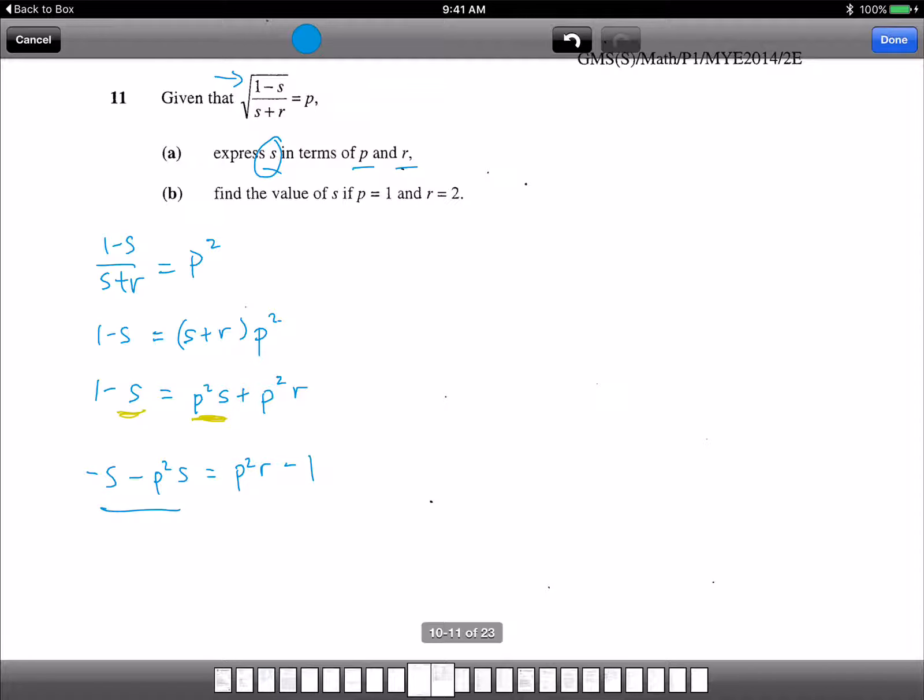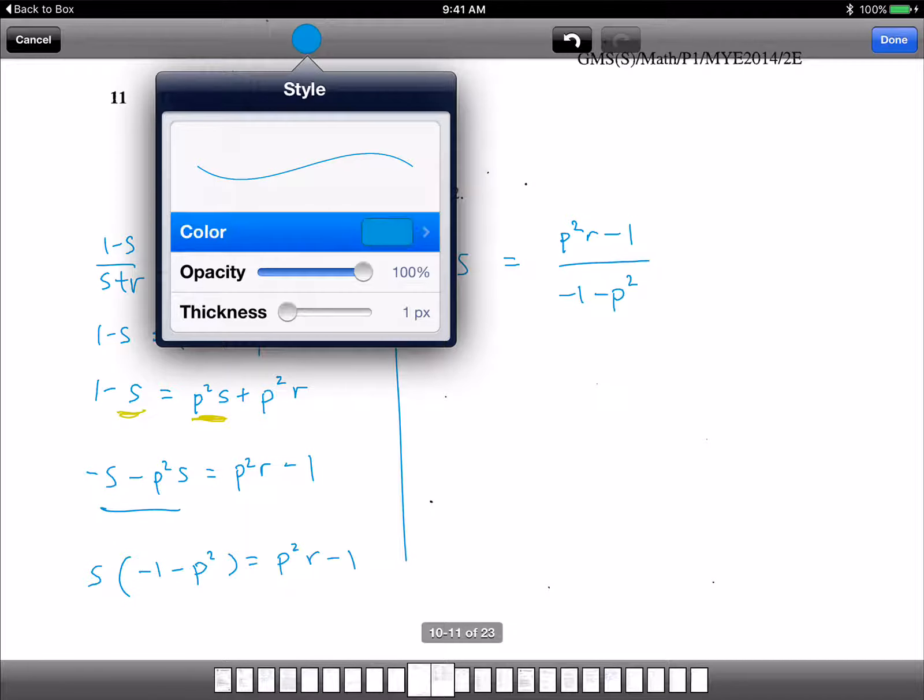Next, we factorize. So we take out S. And we are left with negative 1, negative P squared equals to P squared R minus 1. And then S equals to P squared R minus 1 divided by minus 1 minus P squared. That's it. We take the whole thing.